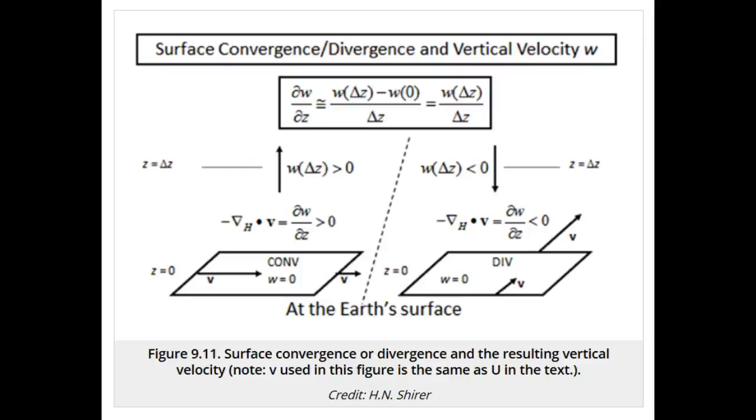The key concepts that allow horizontal divergence to be converted into vertical motion are that mass is conserved, that the air density and density vertical structure are fairly constant with time, and that the vertical wind at Earth's surface and at the tropopause is effectively zero.